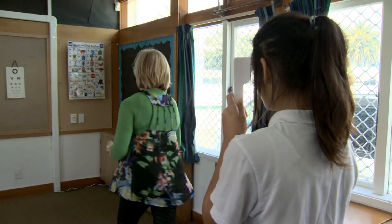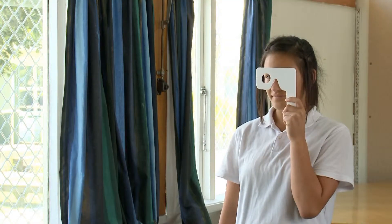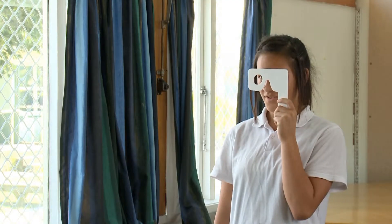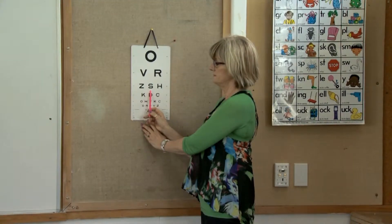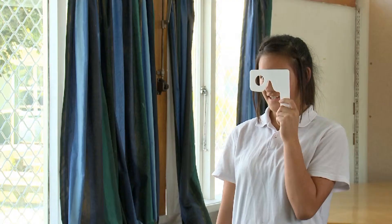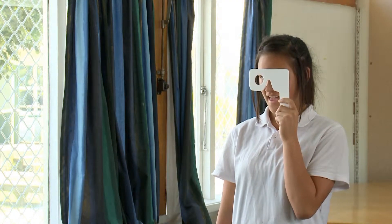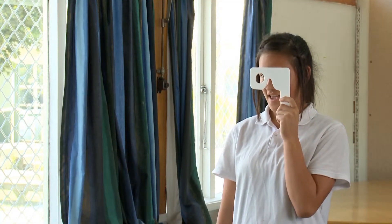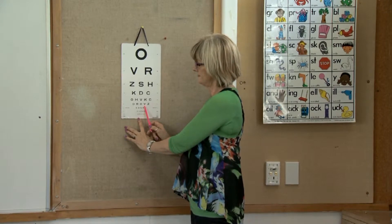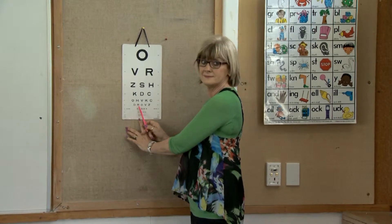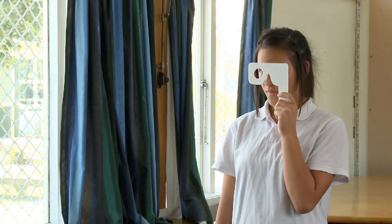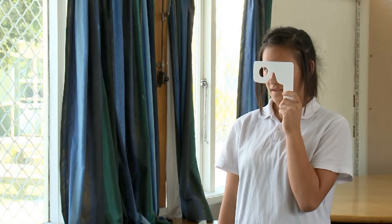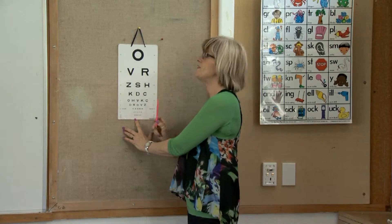Good girl. What's this one? O. Good girl. This one? V. S. H. D. K. H. V. C. Z. V. D. R. R. O. R. K. O. Z. N. Fantastic honey.